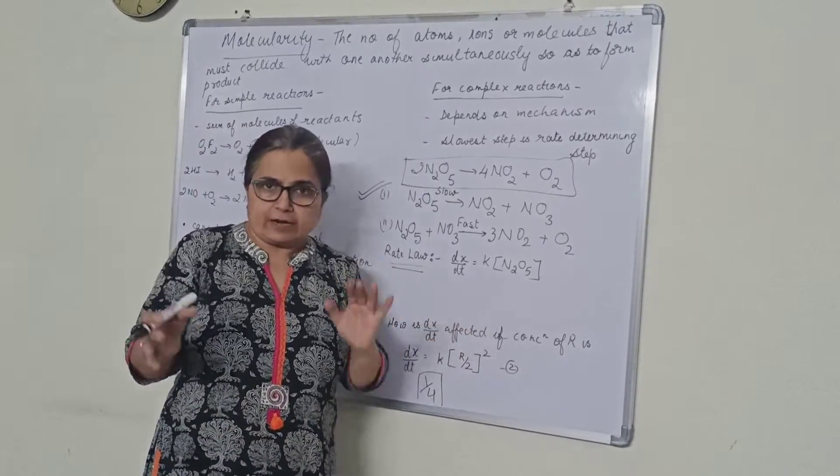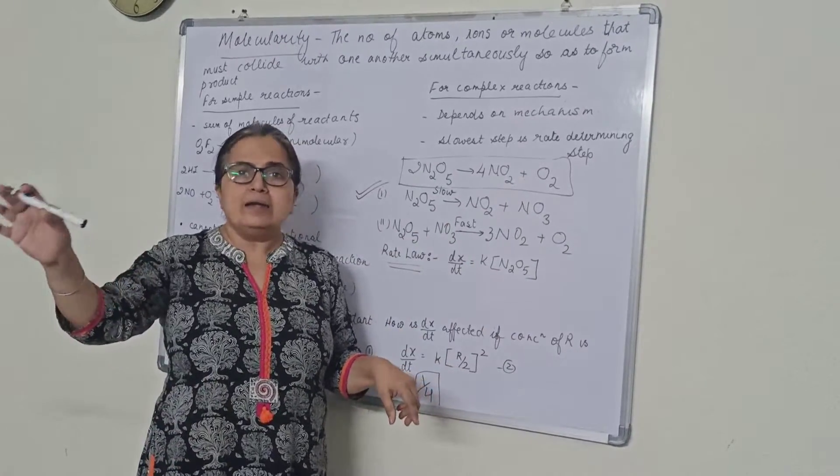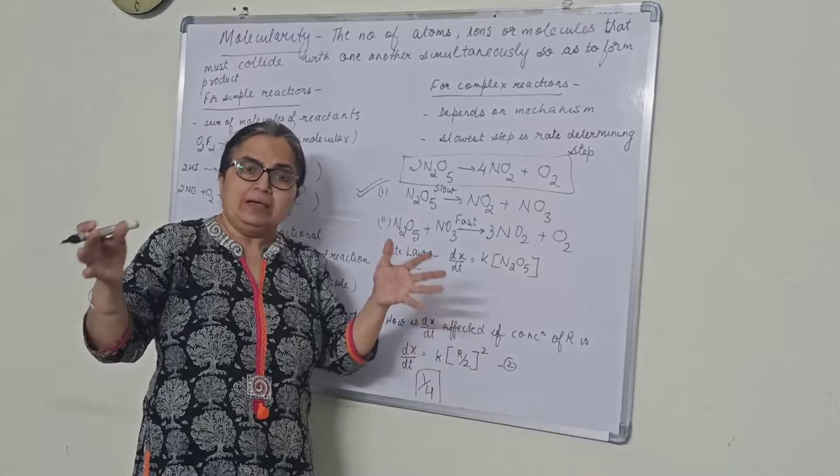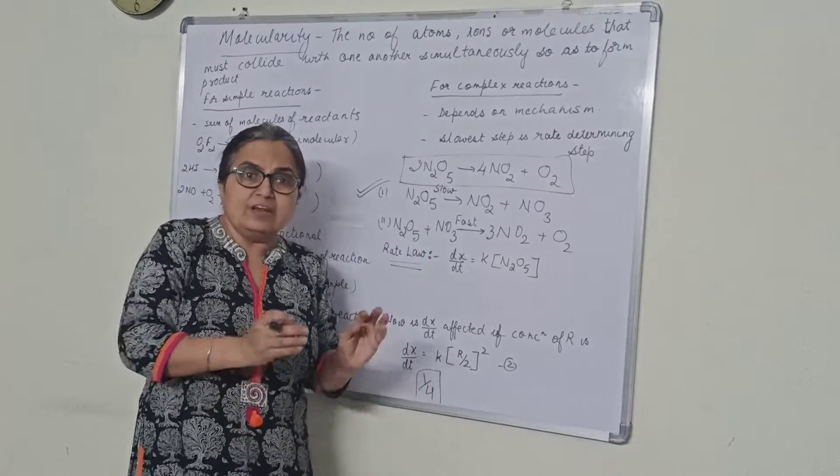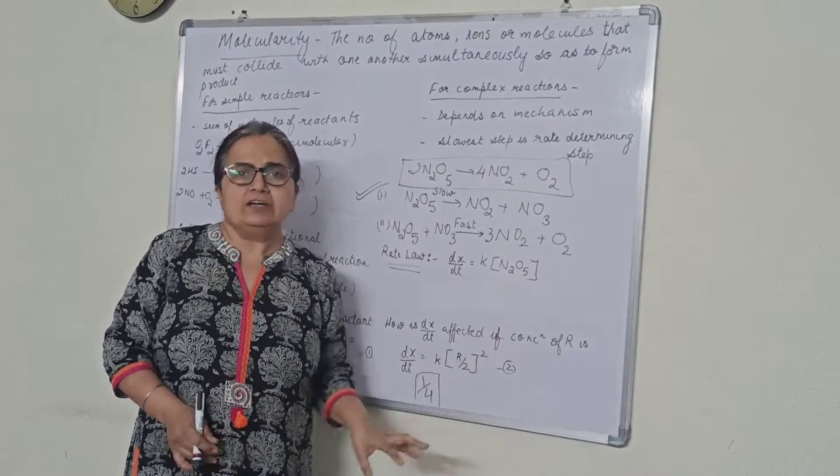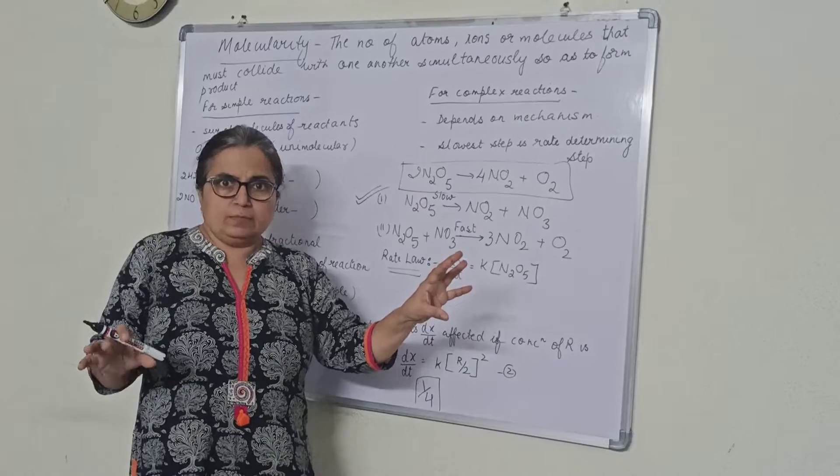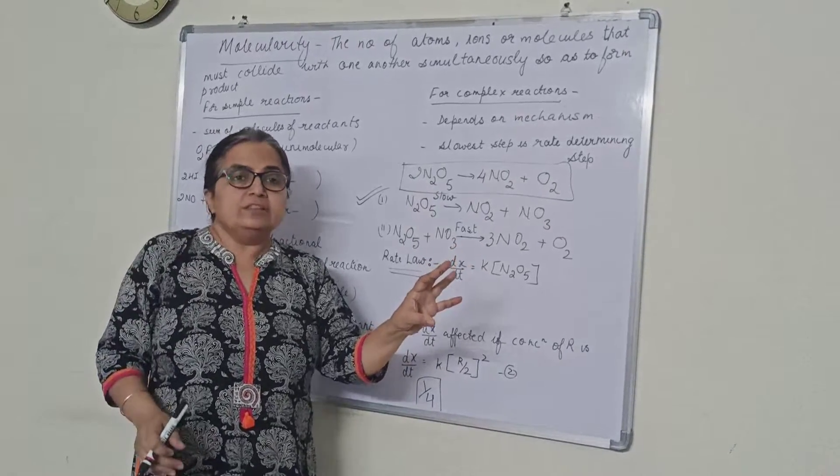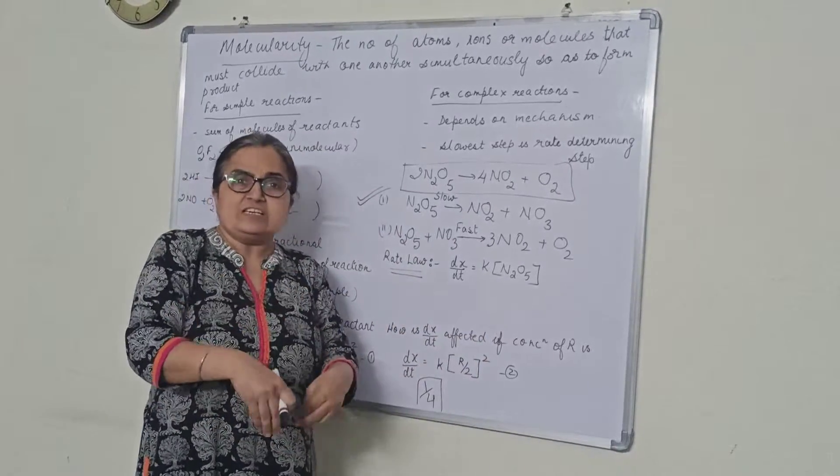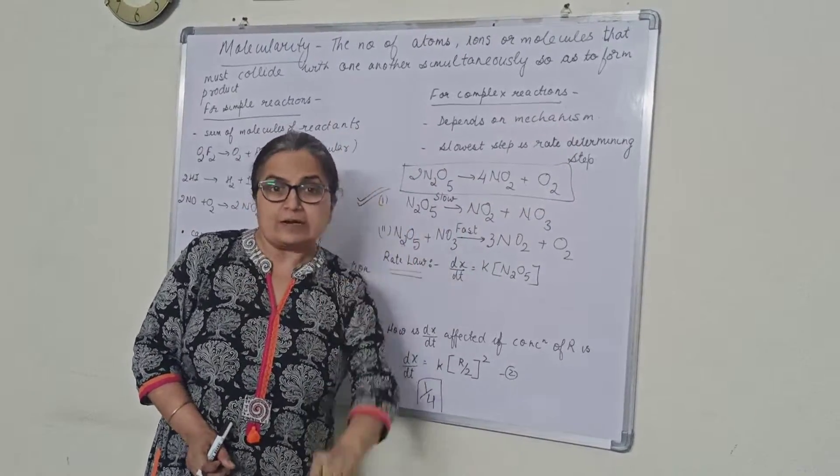Let us take very simple example to understand molecularity. Suppose there is a cycle factory and in that factory there are various units manufacturing paddle, handle, the rim. In a day, how many cycles will be assembled? That depends upon the least number given by one particular unit. For example, if there are 50 handles, 100 paddles and you are getting 50 rims, 50 means pair I am talking about. Then in a day, 50 complete cycles will be ready. That depends upon the least number which is coming up every day. So always we say the slowest step is the rate determining step.